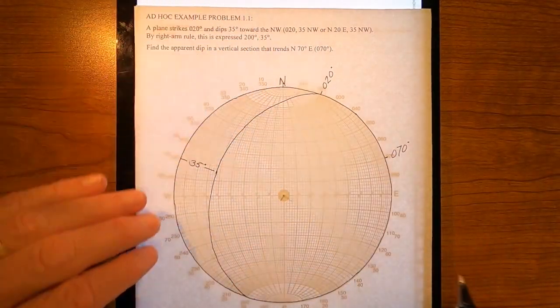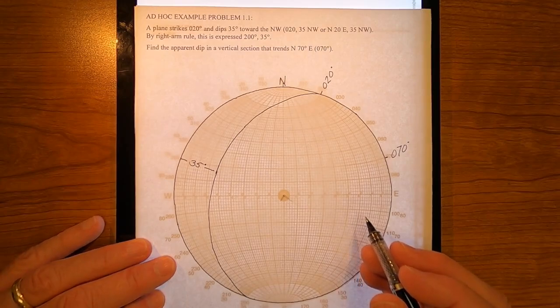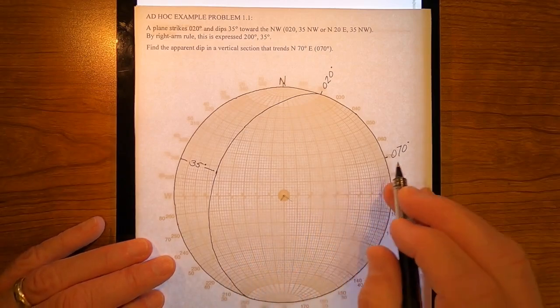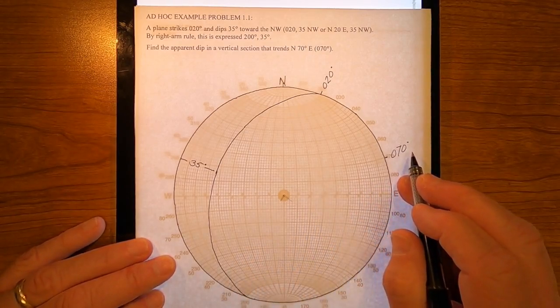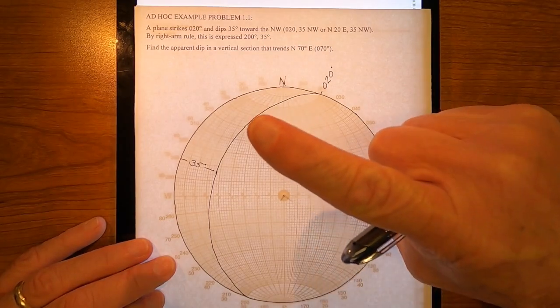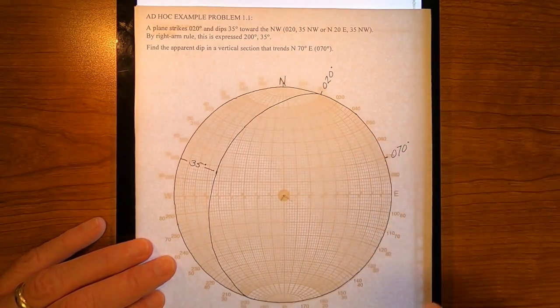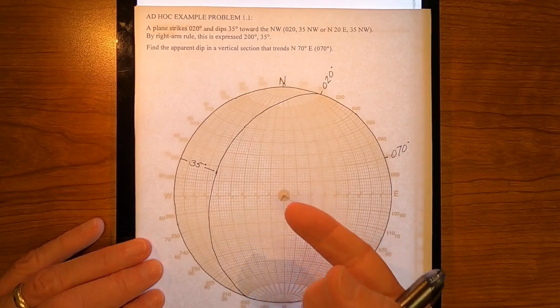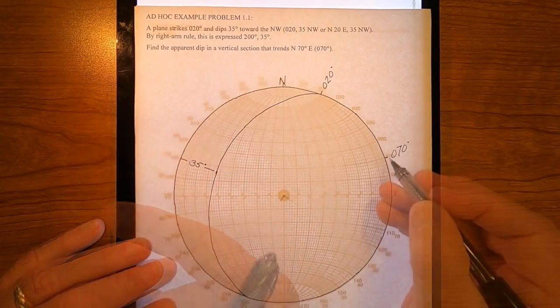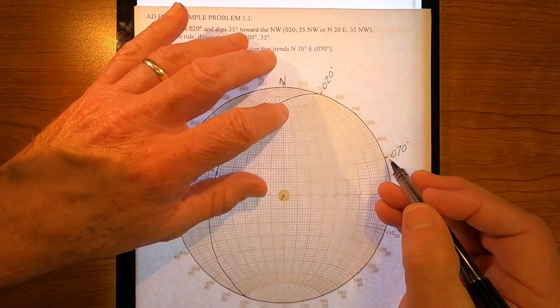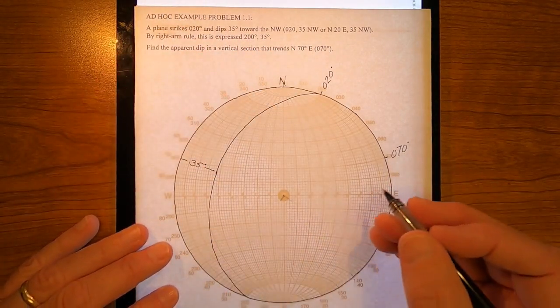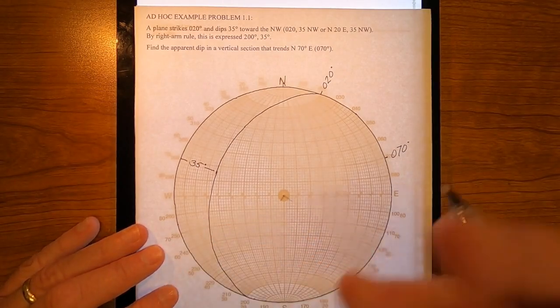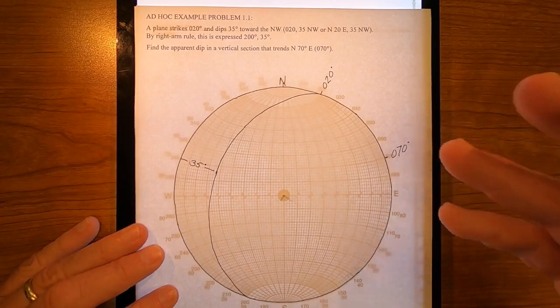There is no apparent dip in the direction zero seven zero. You recall that apparent dip is measured from horizontal downward. And that simply can't occur over here because the plane dips over in this direction. Logically, it's the back azimuth of zero seven zero, that is where the apparent dip is going to be. And you'll recognize that there's a symmetry to this from the last example.